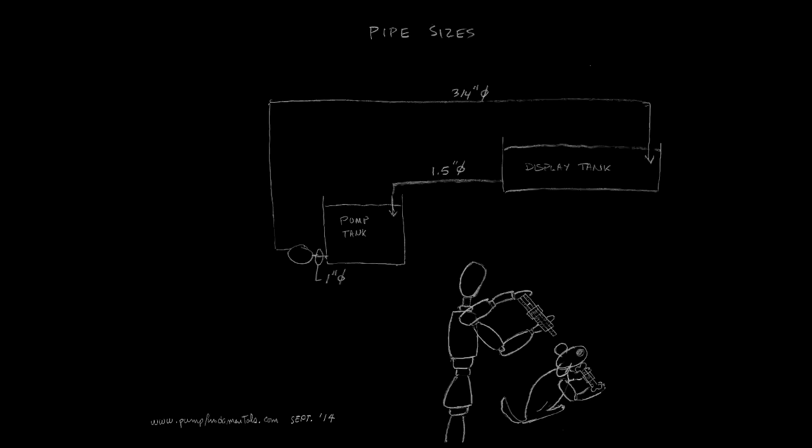Welcome to part 2. Here are the pipe sizes for our system: 1.5 inch for the drain line and 1 inch for the pump suction.